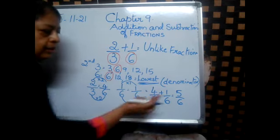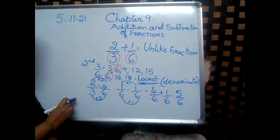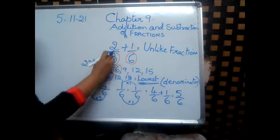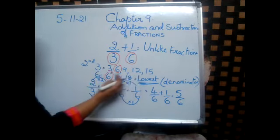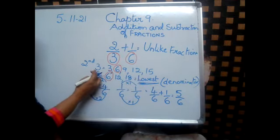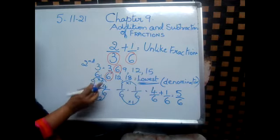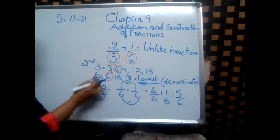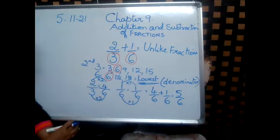The denominators are common, so we can add the numerators. This is the easiest method to solve unlike fraction addition. So 2 by 3 and 1 by 6 — they are different. Find the multiples of 3: 3, 6, 9, 12, 15, and all the multiples of 6. Take the common multiple, which becomes the common denominator, and then you can solve the sum.